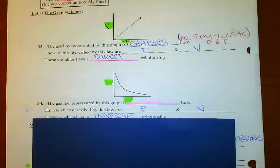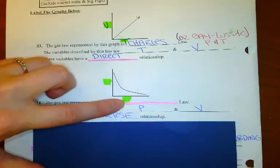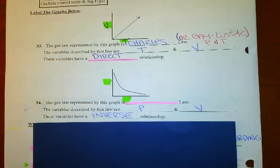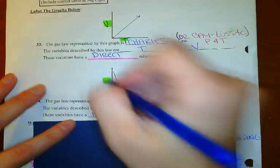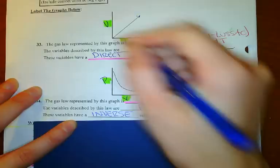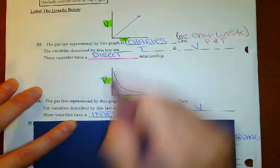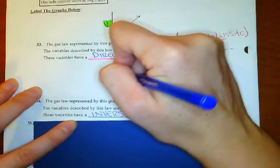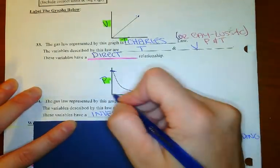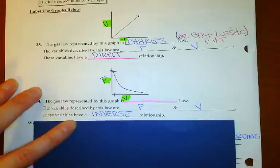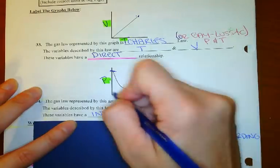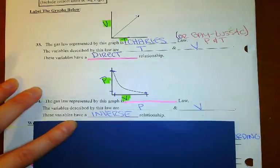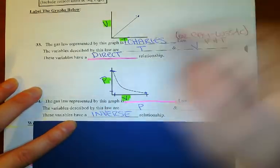Down here, this is an inverse graph, so you need to figure out whose law — and there's only one: P and V is an inverse graph. We've got pressure and volume: when pressure is high (high on the y-axis), volume is low on the x-axis, and when volume is high on the x-axis, pressure is low on the y-axis. That's why it's an inverse relationship.